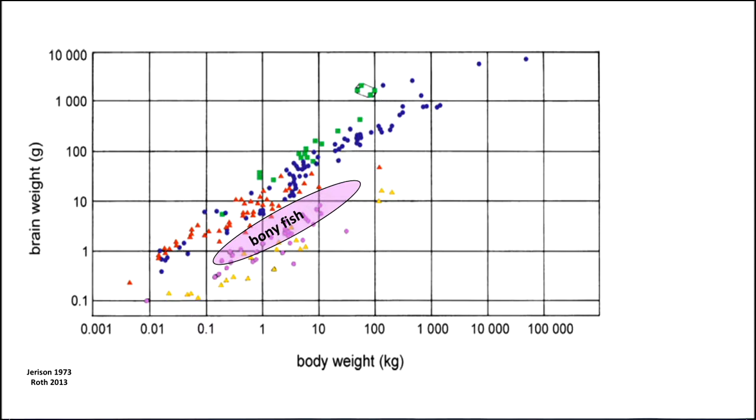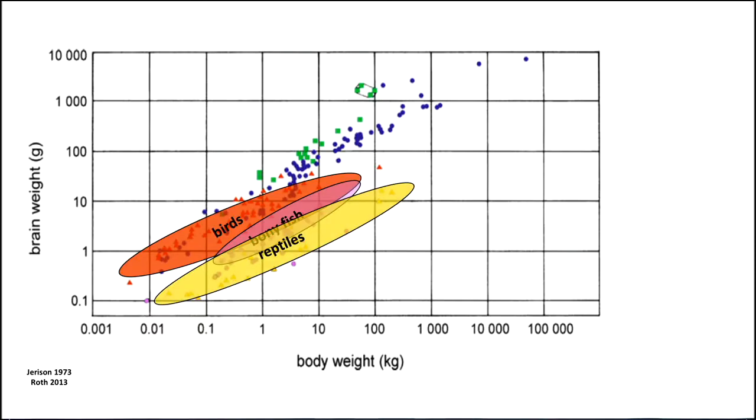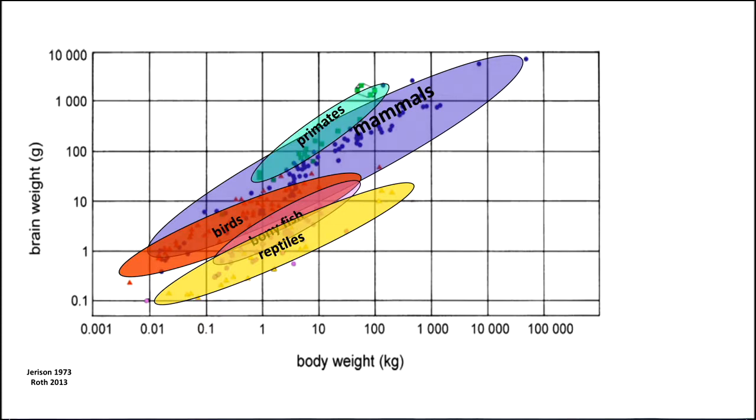Here are the bony fish. Now, the red dots are the birds, and the yellow are the reptiles. So, let's label them and put a little oval there. And the blue dots are the mammals, and among the mammals are primates. The primates are in green. So, let's label those. There are the mammals. Here are the primates. And there are the humans.